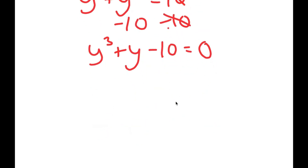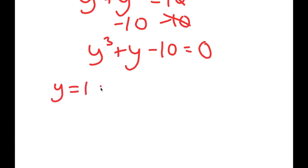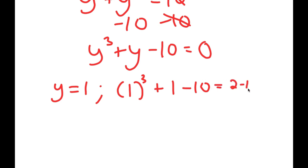To solve this equation, we need to first find one solution and then use that to find the remaining solutions. To find that first solution, we test in values — plug in values and see if they're right. Starting with y equals 1: I get 1 to the power of 3 plus 1 minus 10, which is equal to 2 minus 10, which is negative 8. That's wrong.